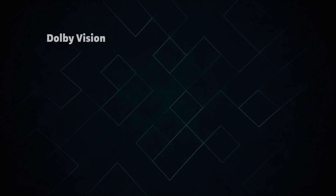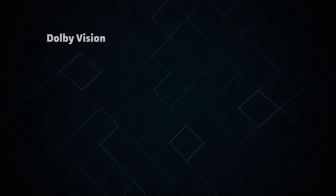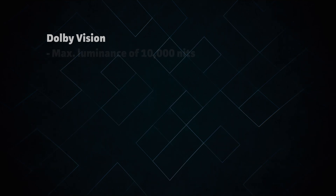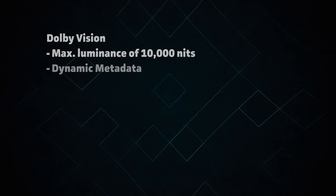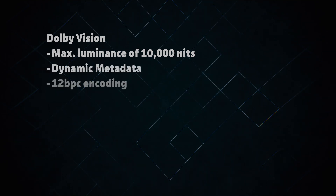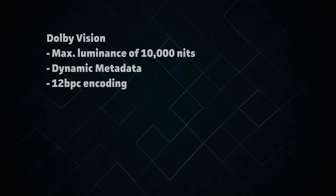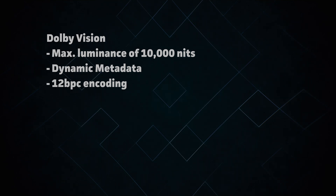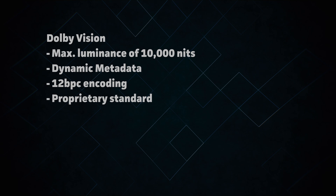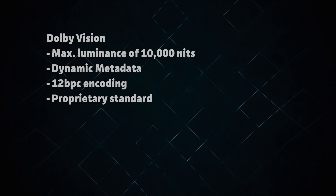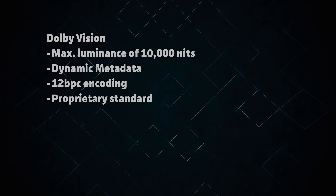And finally, we have the Dolby Vision standard. This is the highest quality but most demanding standard currently on the market. It allows for luminance values up to 10,000 nits, incorporates dynamic metadata, and uses 12 bits per channel for encoding instead of 10. The downside to Dolby Vision is that it's a proprietary standard, meaning you have to pay a license fee in order to create content in it or incorporate the technology into a device.